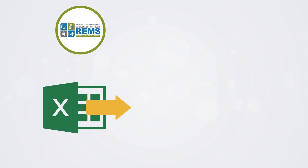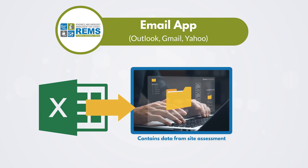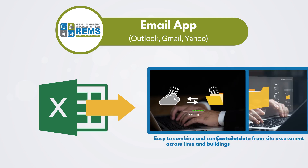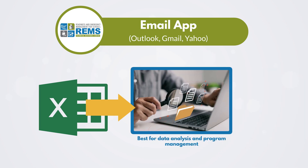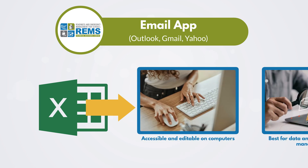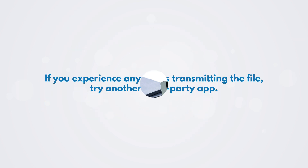The REMS TA Center recommends transferring exported Excel worksheets via a third-party email app such as Outlook, Gmail, or Yahoo. Features of this export format include: contains data from the site assessment; easy to combine and compare data across time and buildings; best for data analysis and program management; accessible and editable on computers; and does not include images. If you experience any issues transmitting the file, try another third-party app.